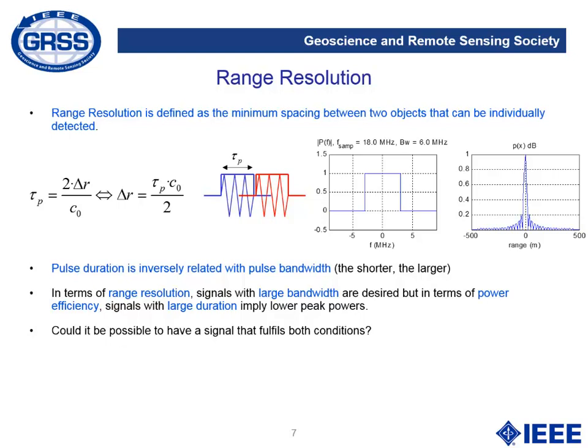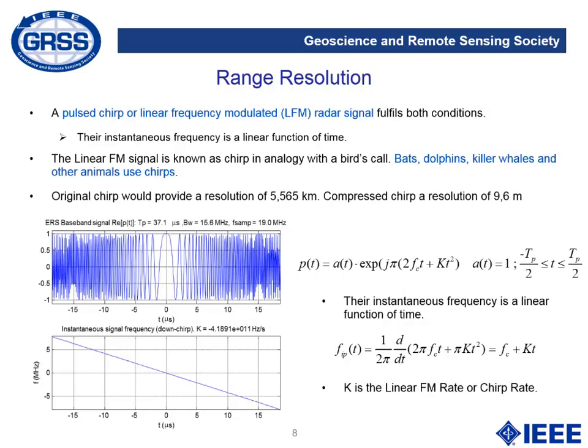The question is: could it be possible to have a signal that fulfills both conditions? The answer is yes. A positive chirp, also known as a linear frequency modulating radar signal, is able to fulfill both conditions. Its main characteristic is that the instantaneous frequency is a linear function of time. The linear FM signal is known as a chirp, in analogy with a bird's call. Bats, dolphins, killer whales, and other animals use chirps as part of their sonars.